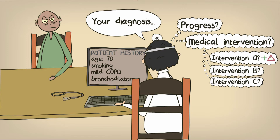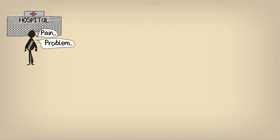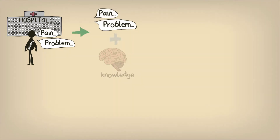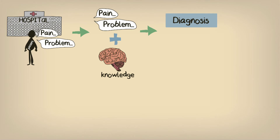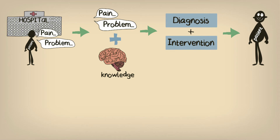When a patient enters a hospital with a set of complaints, we, the medical practitioners, have to use information from the patient as well as our own knowledge to determine what the patient's problem is and how we should proceed in order to lead our patient towards a favorable outcome. But what kind of information should we use to make decisions? And where does this knowledge come from?